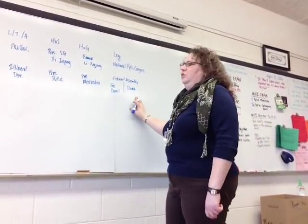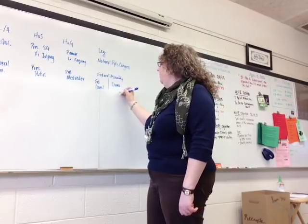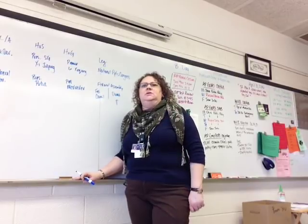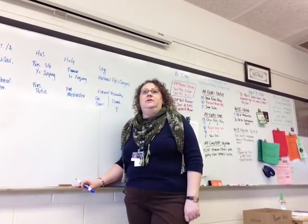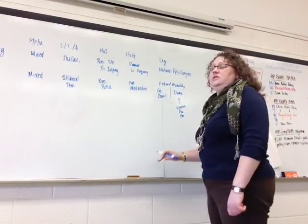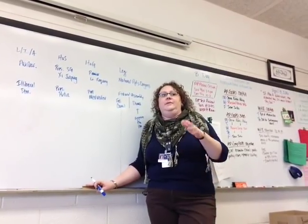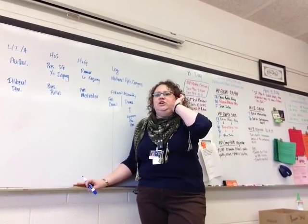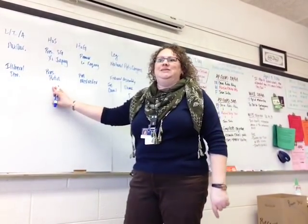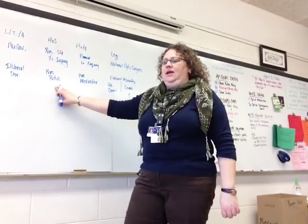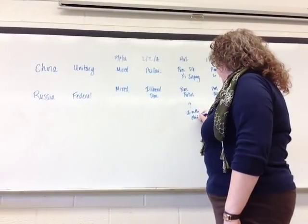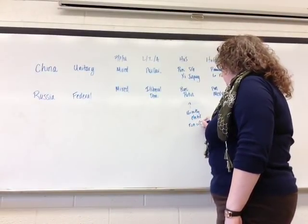Which of these two would you say is more powerful? The Duma has very little real power. The one real check that the Duma has is they have to approve the Prime Minister, along with cabinets, officials, and justices. The Prime Minister is appointed by the President. The President is directly elected, but Russia does a runoff election — you have to get over 50%, which would be the majority.